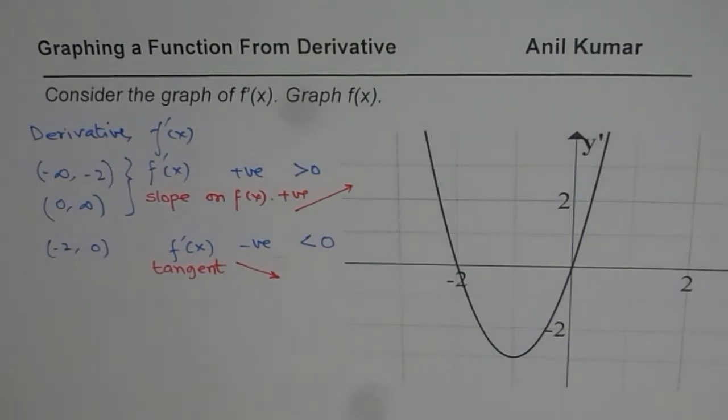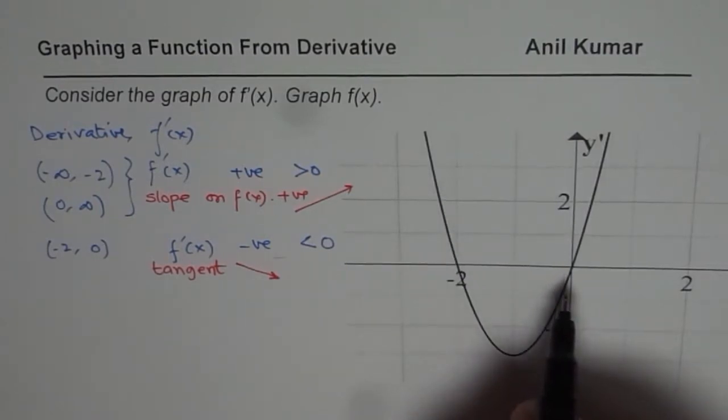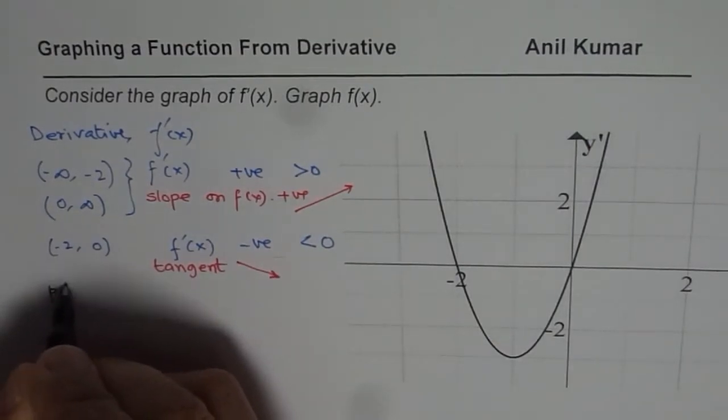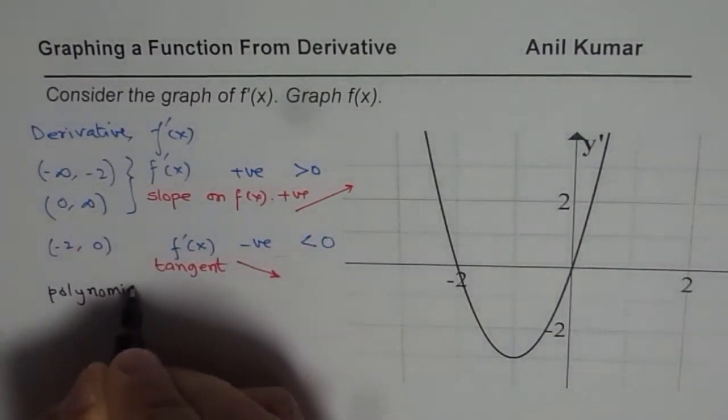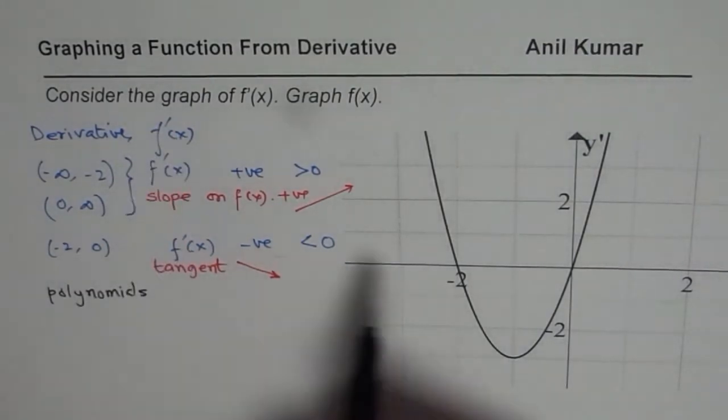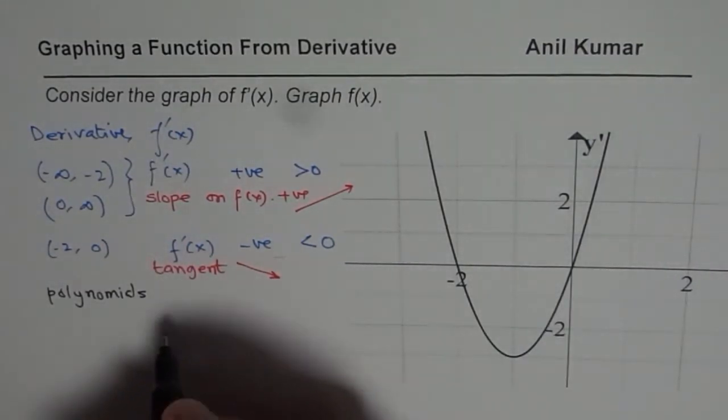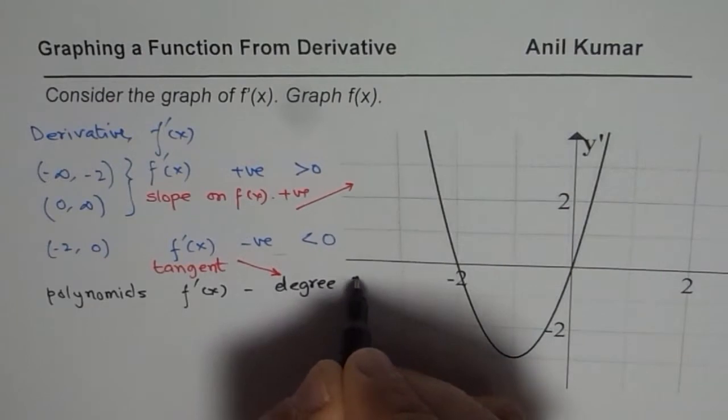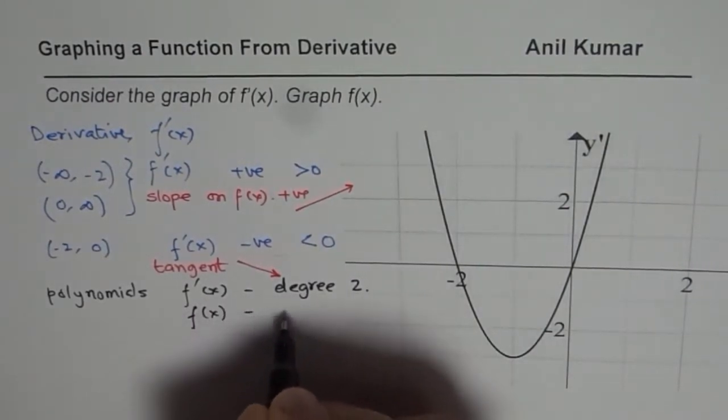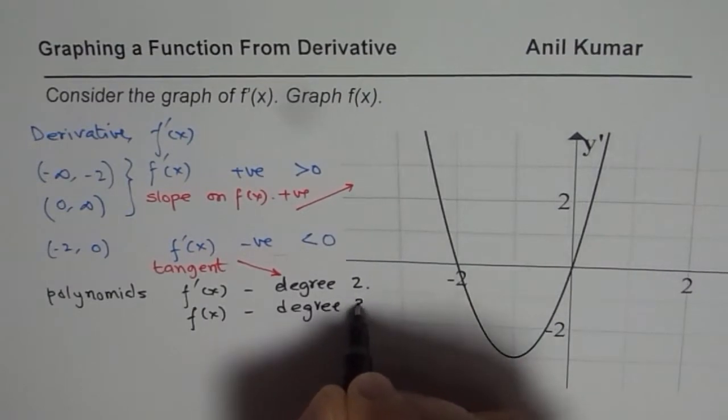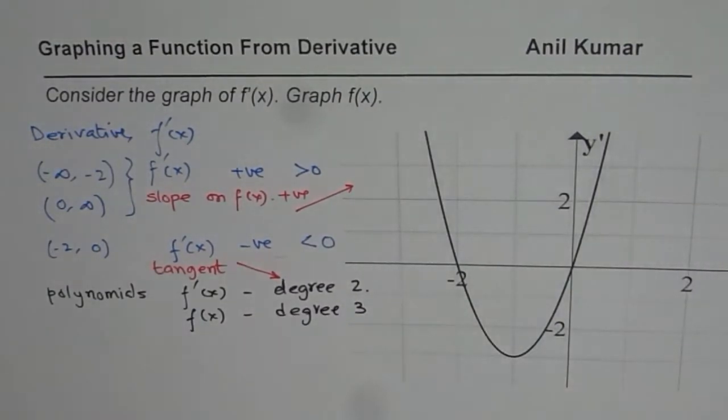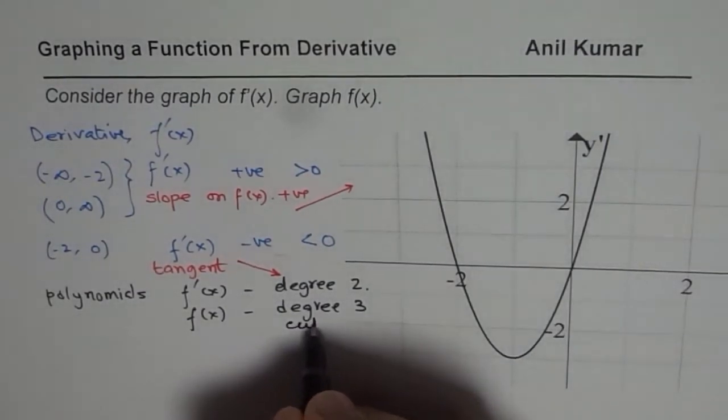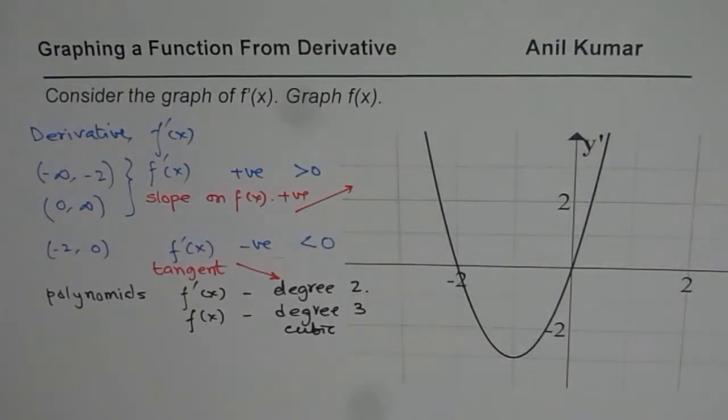Another part you should understand is it is a continuous function. When working with continuous functions, think about polynomials. If the derivative is degree 2, the function should be of degree 1 higher. So it should be degree 3. We are looking for a cubic function. So f(x) is cubic.